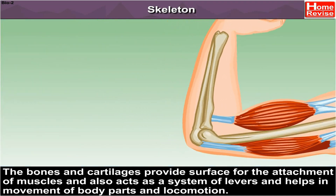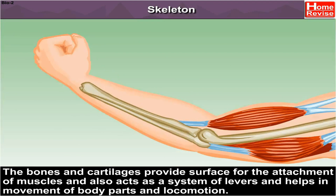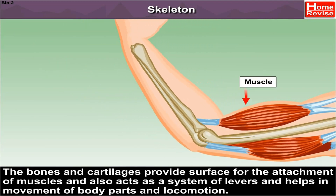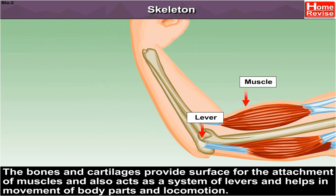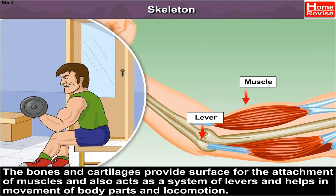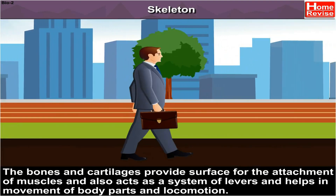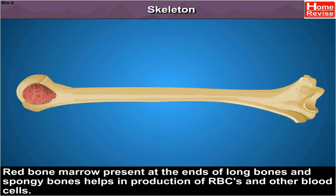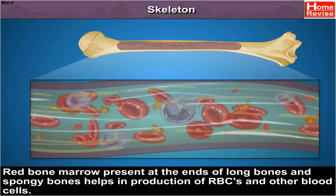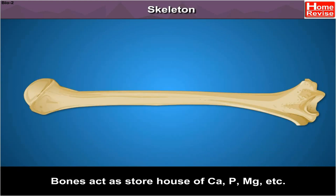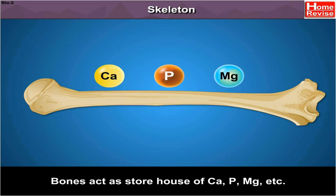The bones and cartilages provide surface for the attachment of muscles and also act as a system of levers, helping in movement of body parts and locomotion. Red bone marrow present at the ends of long bones and spongy bones helps in production of RBCs and other blood cells. Bones act as a storehouse of calcium, phosphorus, and magnesium salts.